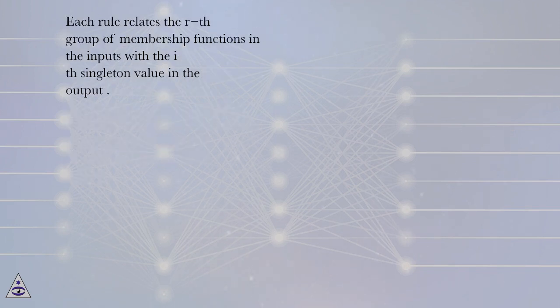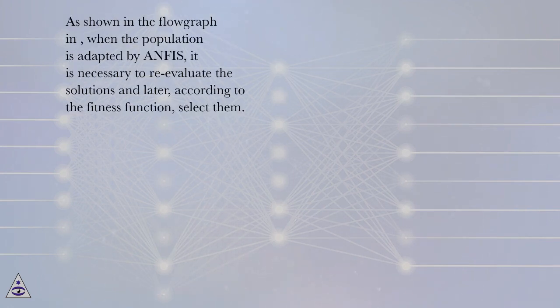Each rule relates the R-th group of membership functions in the inputs with the I-th singleton value in the output. As shown in the flowgraph, when the population is adapted by ANFIS, it is necessary to re-evaluate the solutions and later, according to the fitness function, select them.